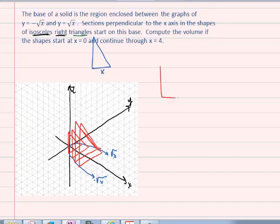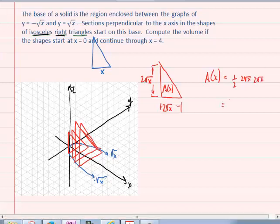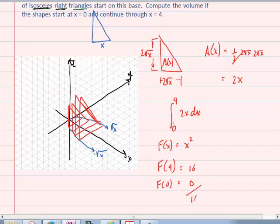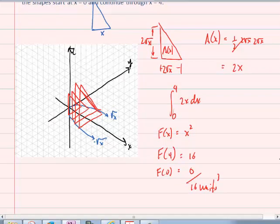And if you look at the isosceles right, its base dimension is 2 root x. Its height is the same as its base because it's isosceles right. So that will be 2 root x by 2 root x. So my area equation of this face is going to be 1 half 2 root x by 2 root x, which will give you 2x as your integrand. So when I integrate from 0 to 4, 2x dx, my antiderivative is going to be x squared. And when I evaluate it at 4 and at 0, I'm going to get 16 and 0. And the volume will be 16 units cubed. Which is exactly half of if that was a square base. Which is to be expected.